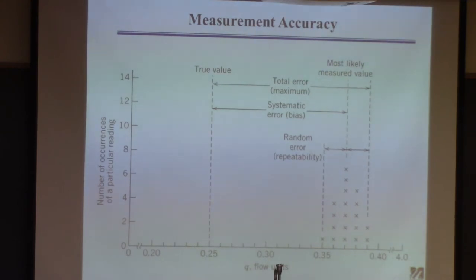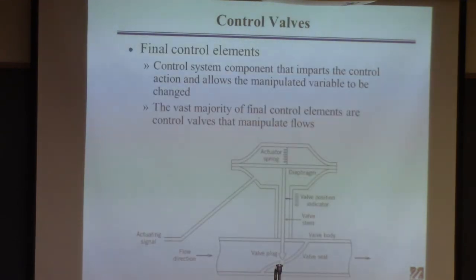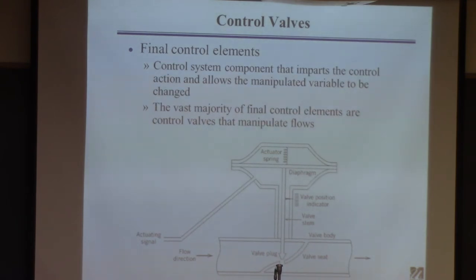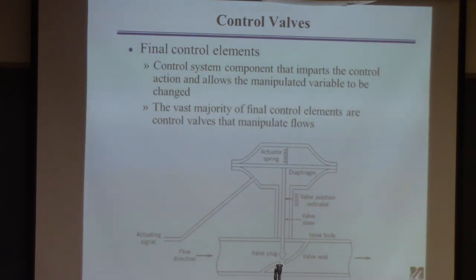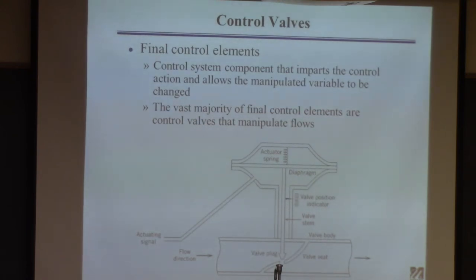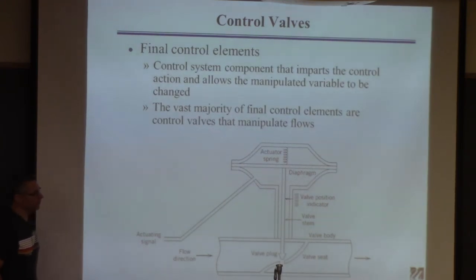So now on to control valves. If you have a control system operating in industry and it's not working, there's basically three main possibilities: the controller itself is poorly designed or poorly tuned; the sensor is not working, so you have a bad measurement coming into the controller; or finally, you don't have the ability to actuate correctly. If you go into a plant and look at what the controllers change to achieve control of temperature, flow, or pressure, it's almost always a control valve — I'd say 95% of final control elements are valves.